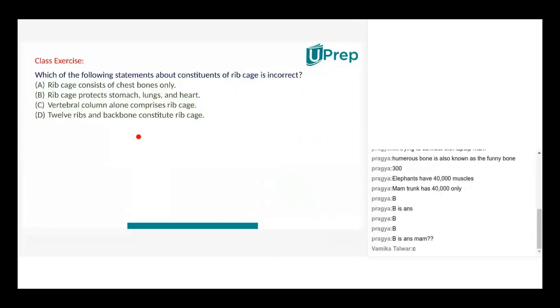See, even A is incorrect. Even A is incorrect because the cage consists not only of the chest bones, it also of the back bones. The cage has got a pair of bones behind also. So even C is incorrect. I think B and D is correct, right?